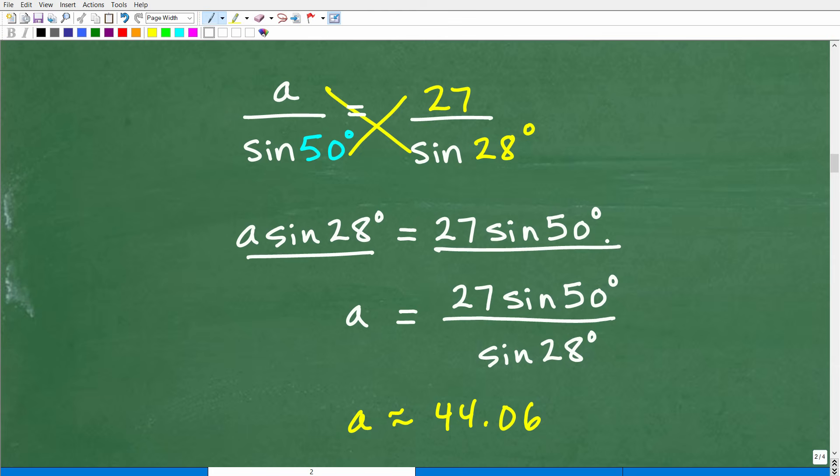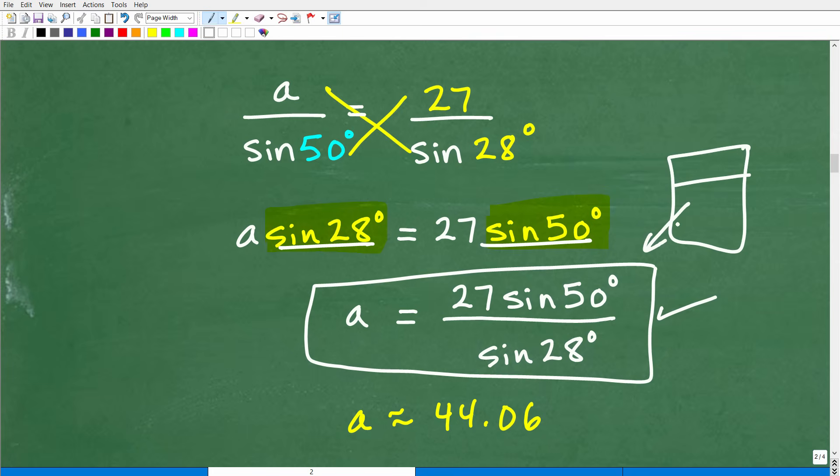Now, let me give you a little bit of a tip here. Do not start calculating out the sine of 28 degrees, sine of 50 degrees. Don't do that yet on your calculator. You want to use your calculator at the very end. Do all the algebra first. And then you can use your calculator to actually compute the answer. So here, to solve for a, I simply just have to divide both sides of the equation by sine of 28 degrees. So you're going to end up with this. a is equal to 27 times sine of 50 degrees divided by sine of 28 degrees. Now, we go ahead and get our calculator, and we do all this number crunching. And if you do this correctly, you're going to get a is equal to 44.06.